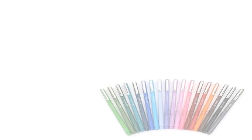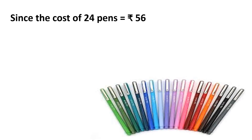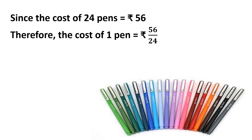Since the cost of 24 pens equals Rs. 56. According to the unitary method, we will find out the cost of one pen first. Therefore, the cost of one pen equals — whenever we need to find out the cost for one, we need to divide. The cost of 24 pens equals Rs. 56, and for one pen it is 56 divided by 24.